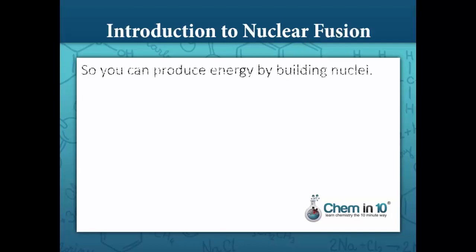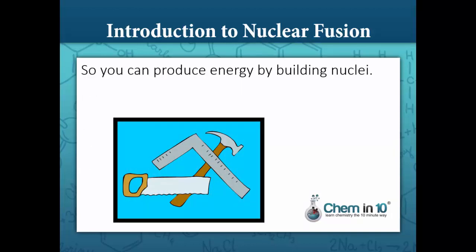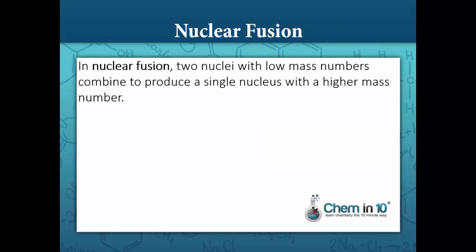Let's first learn about nuclear fusion. We know that when we build nuclei, the vanishing mass or mass defect produces a huge amount of energy. That's the idea behind nuclear fusion. In nuclear fusion, two nuclei with low mass numbers combine to produce a single nucleus with a higher mass number.